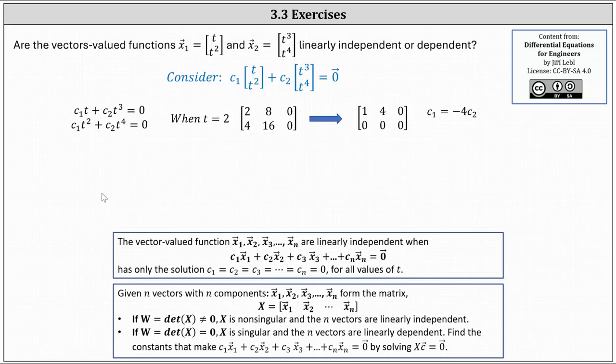In this case, notice how vector X would be a two by two matrix where the first column is x1 and the second column is x2. And now we find the determinant.